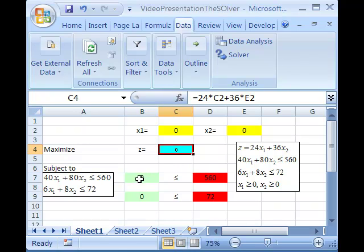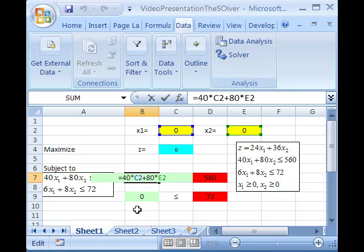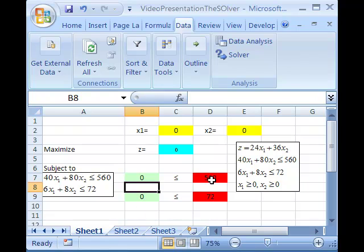Then you'll go ahead and you will write in the two halves of the constraint equations, just like you did with the equalities. In here, I wrote the equivalent of the first constraint equation, which was equals 40 times c2 plus 80 times e2. Over here in the red, I wrote just the 560, because that represents the right-hand side of the inequality.